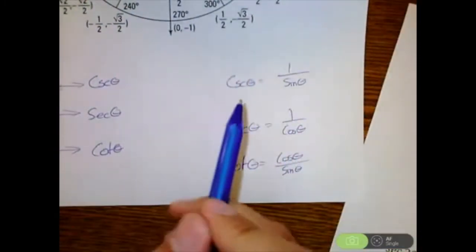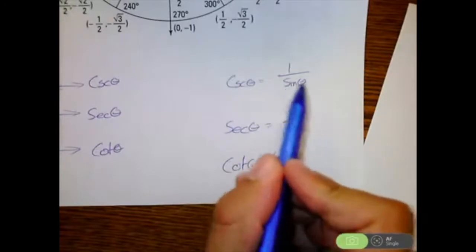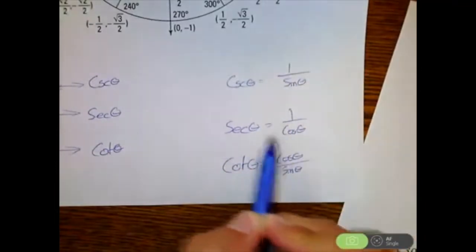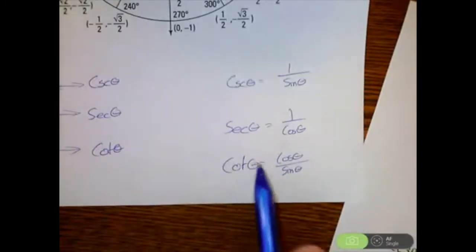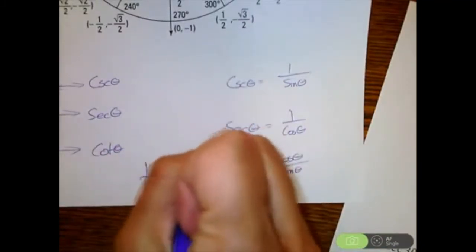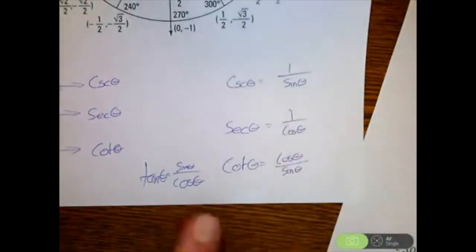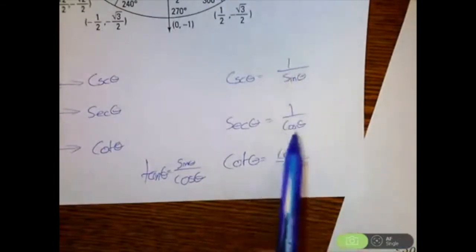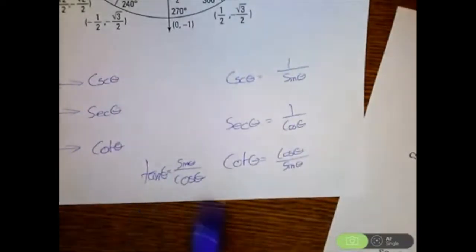So how we're going to tackle cosecant, secant, and cotangent: if you want to know cosecant, find sine of the equivalent angle and flip it. If you want to find secant, look for cosine of that same angle and flip it. Tangent is sine divided by cosine, so if we flip that, cotangent is cosine divided by sine. If you know sine and cosine, you can accomplish any of these other trig functions.